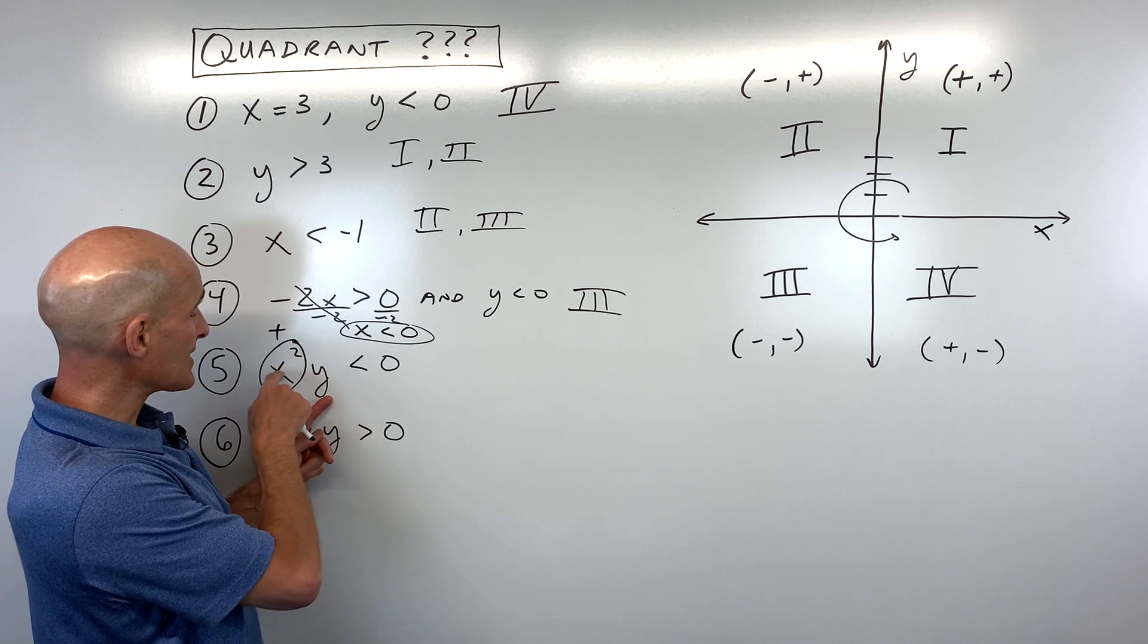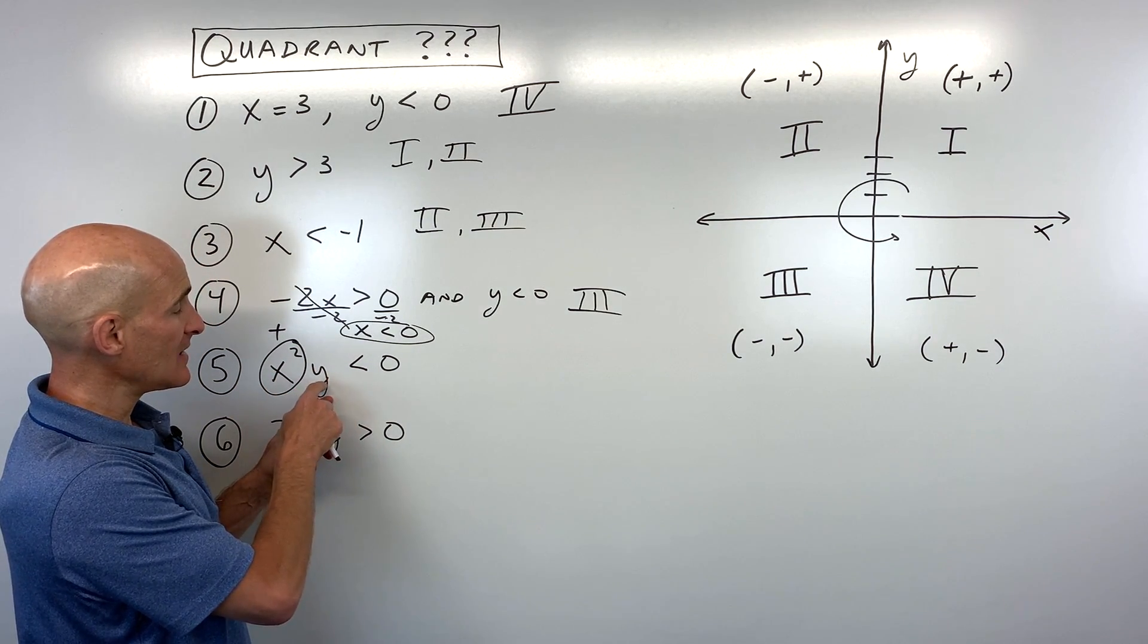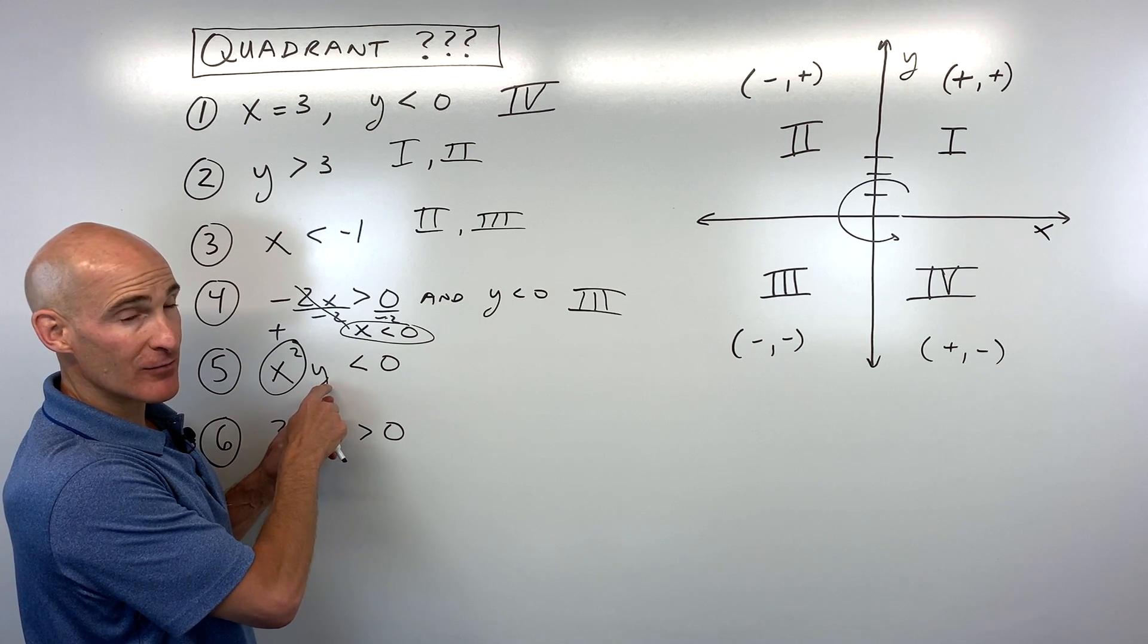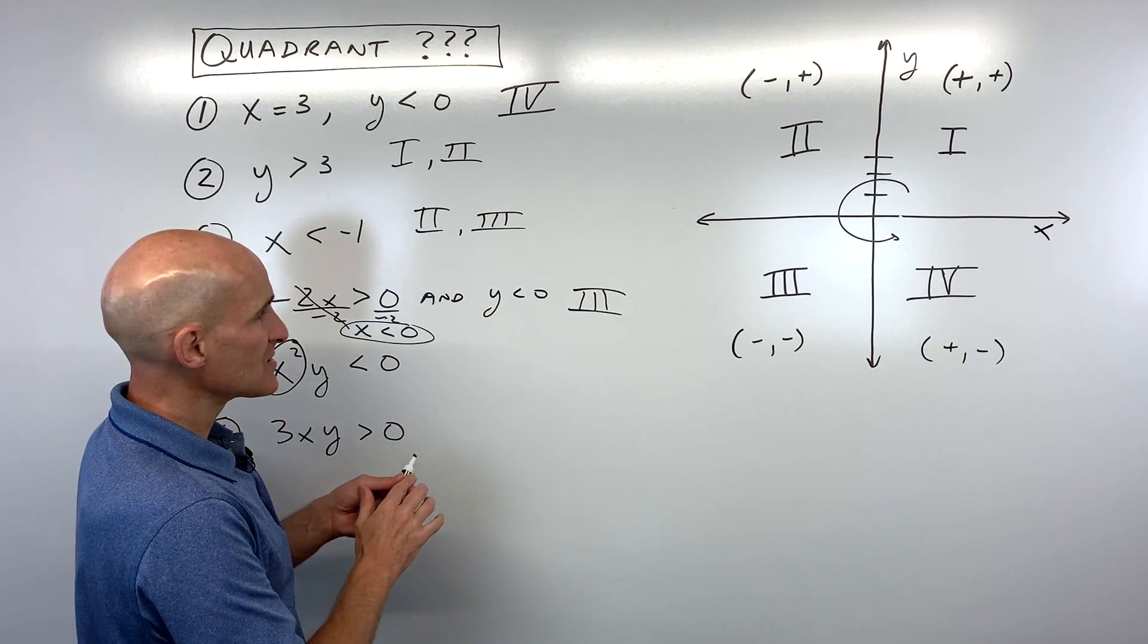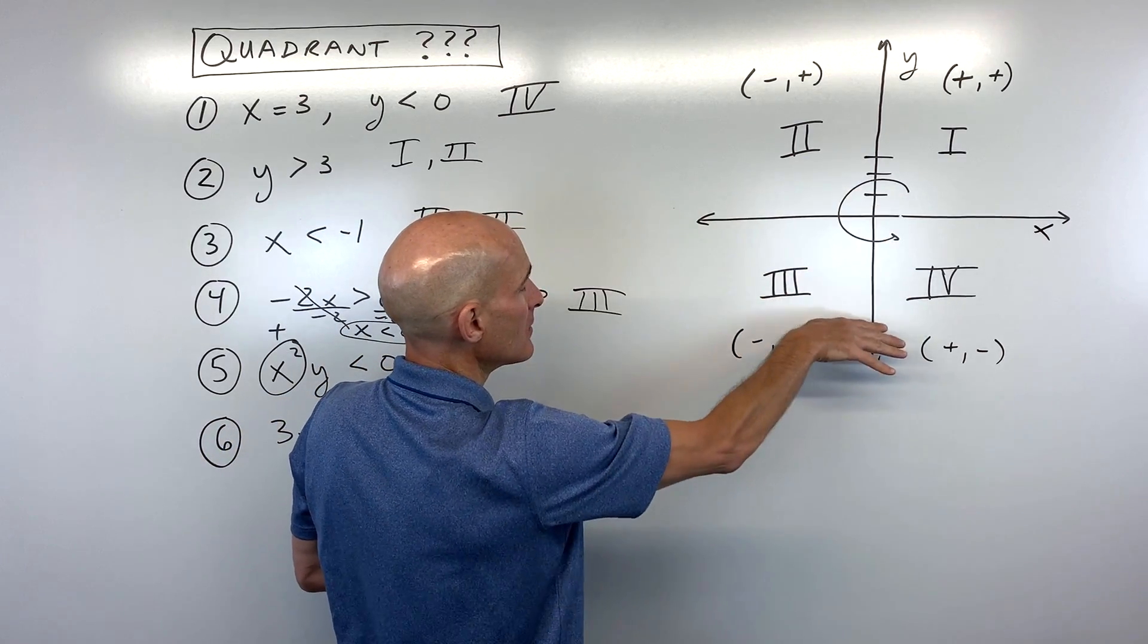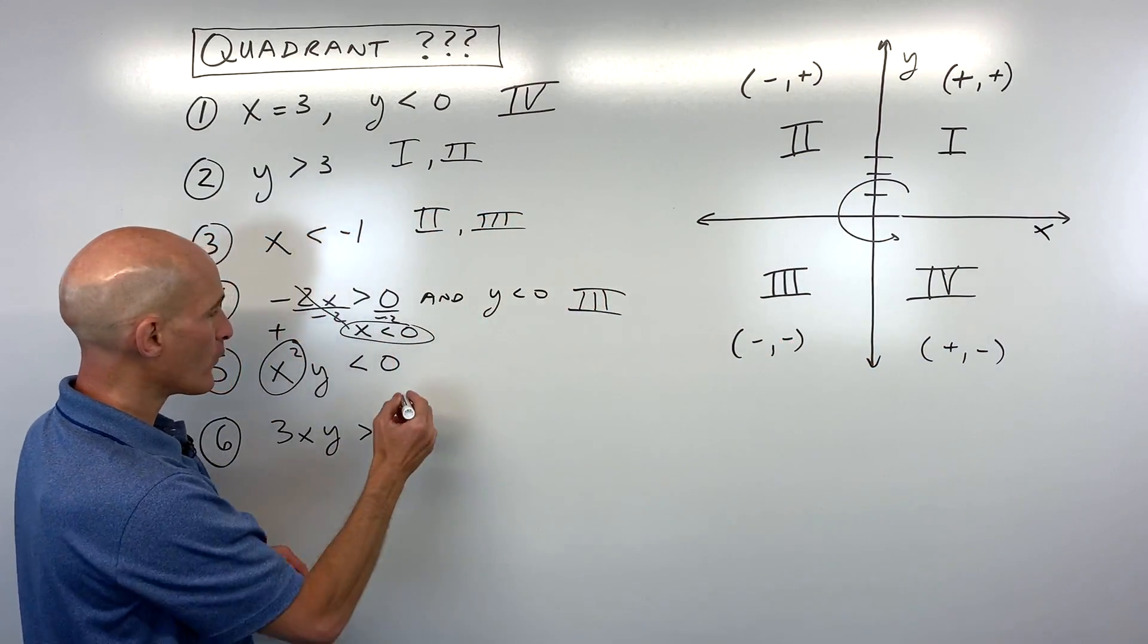So that means that x could be anything, positive or negative. But y has to be less than zero, meaning negative. So positive times a negative would give us a negative. So let's see, y is less than zero. That's going to be here. And x could be negative or positive. So that's going to be in the third or fourth quadrant.